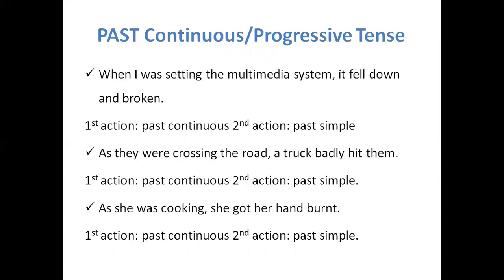'As they were crossing the road...' and 'As she was cooking, she got her hand burnt.' The action was in the middle — 'as she was cooking' — it was in process, and another action became past simple. It's a very easy rule: when two actions are given, one past simple and one past continuous, the past continuous is the earlier, longer action. 'When' or 'as' can be used as conjunctions with past continuous.